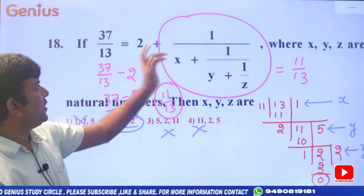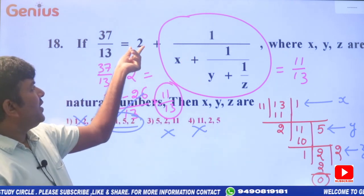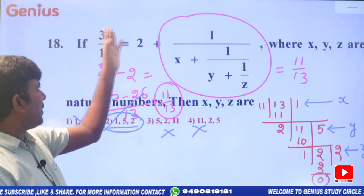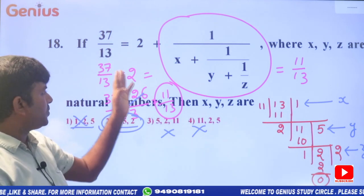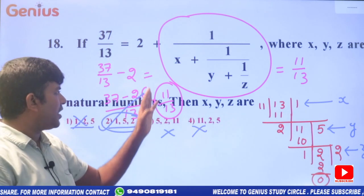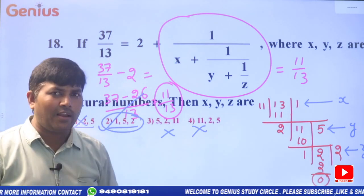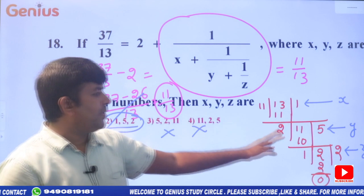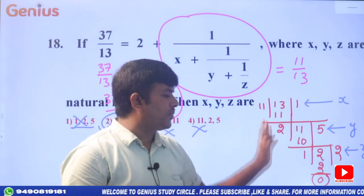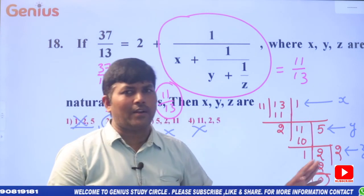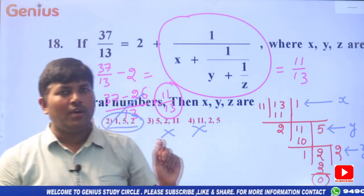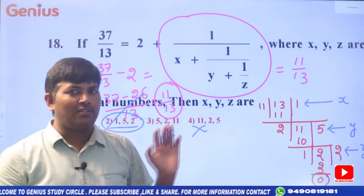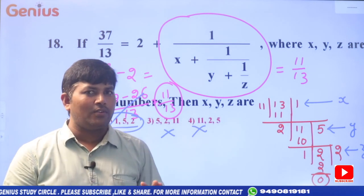To do this correctly: 2 needs to be subtracted, giving 11/13. Be careful with this step. Following the procedure gives you x, y, z values clearly.